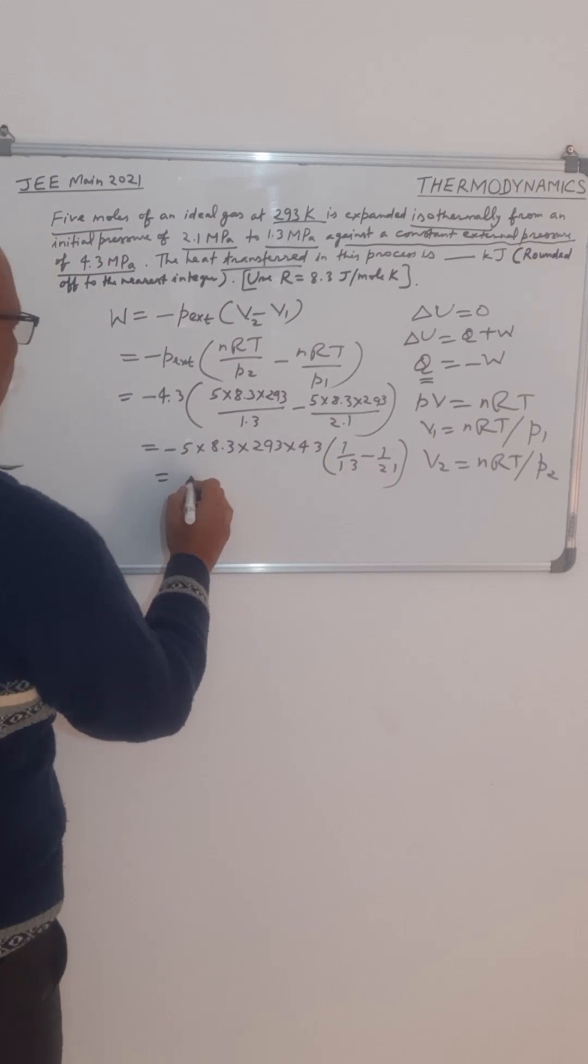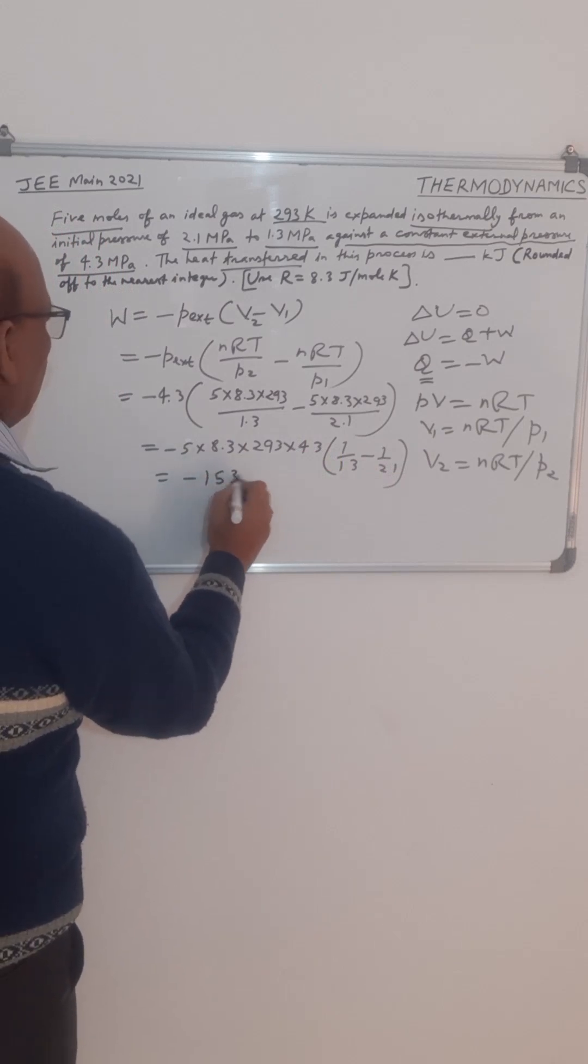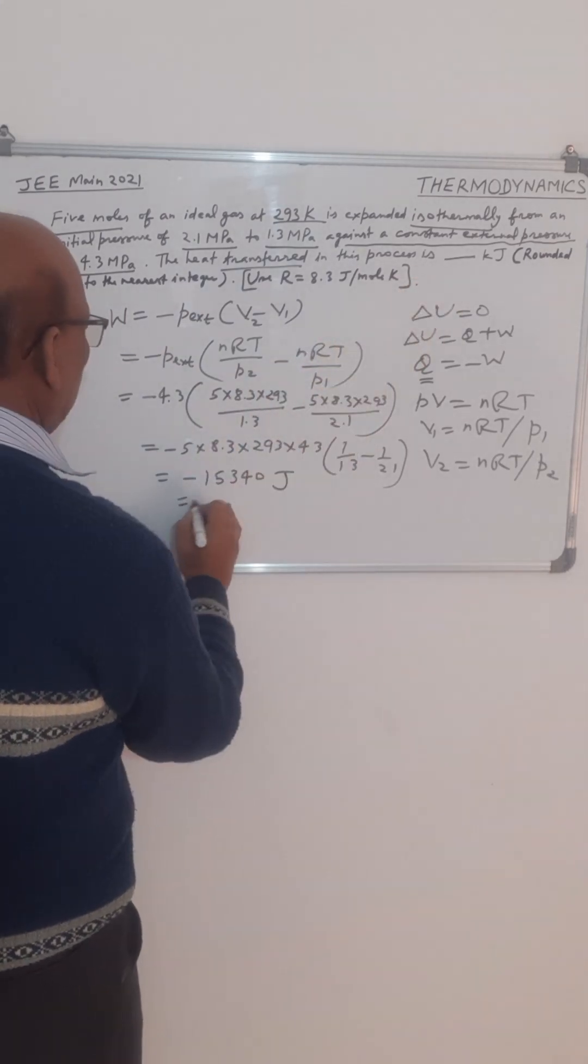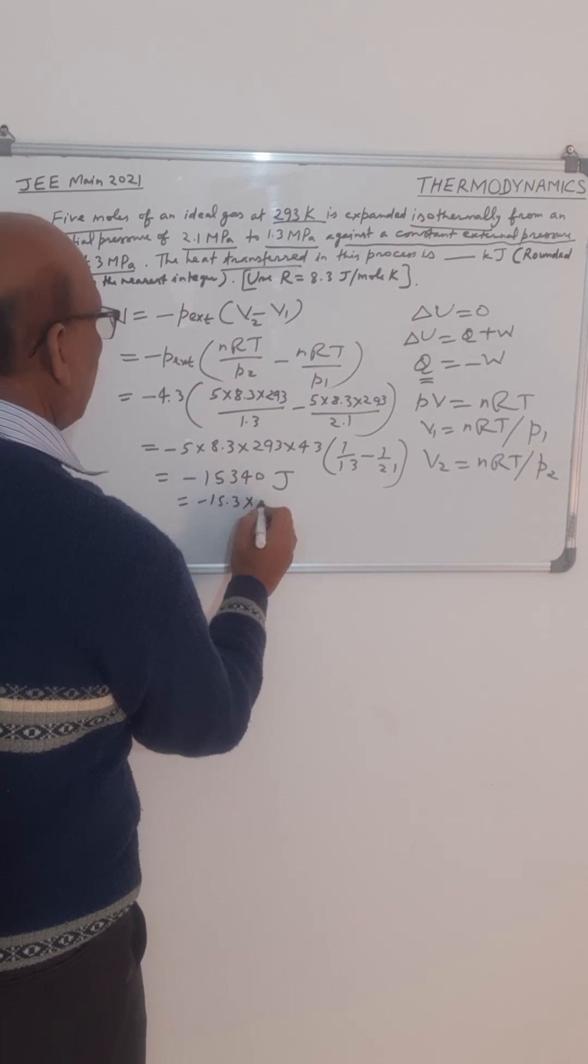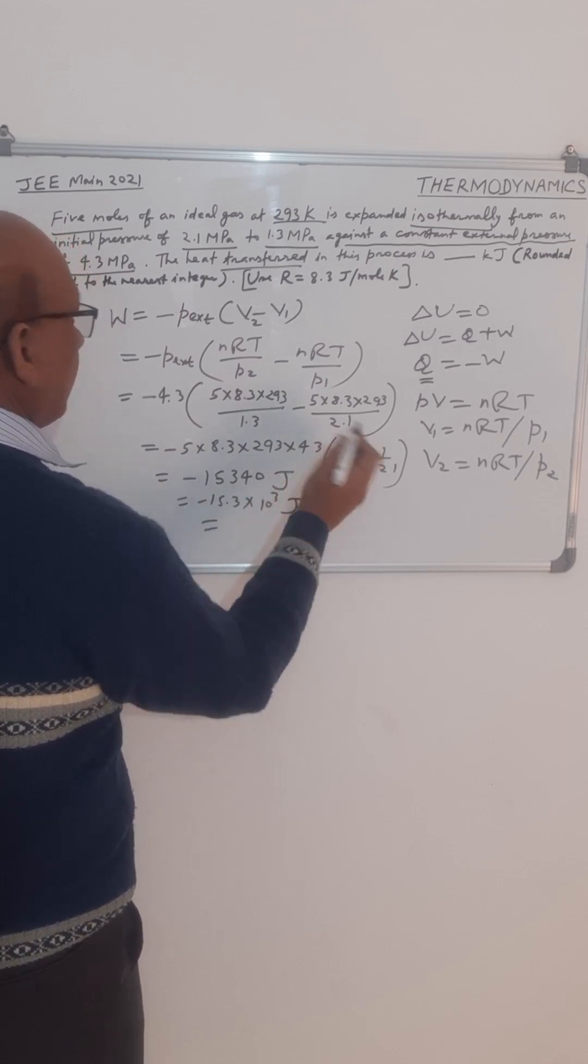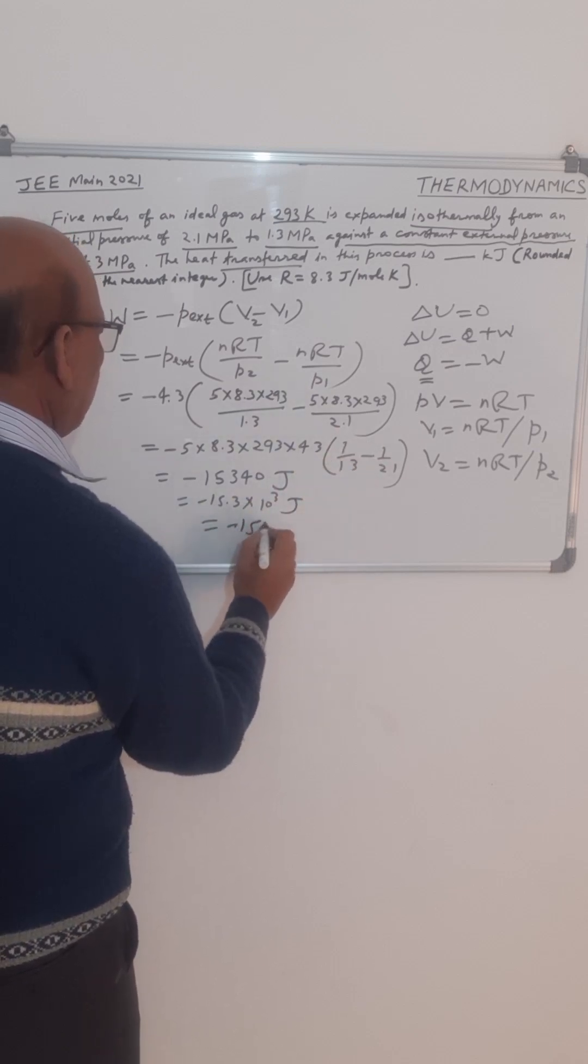And finally when we calculate, it will come to minus 15340. This will be in Joules. But we have to find in kilojoules, so this will be minus 15.3 into 10 to the power 3 Joule. So with nearest integer will be minus 15 kilojoule.